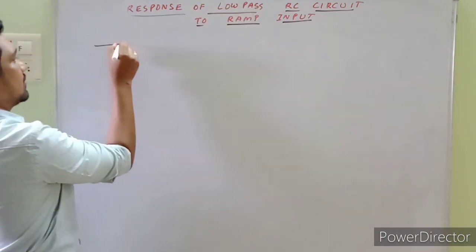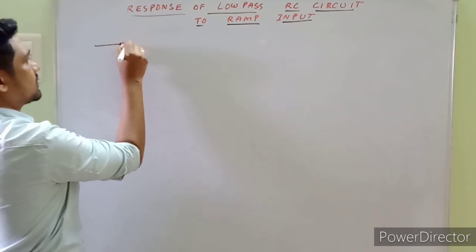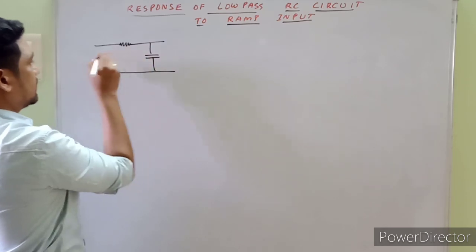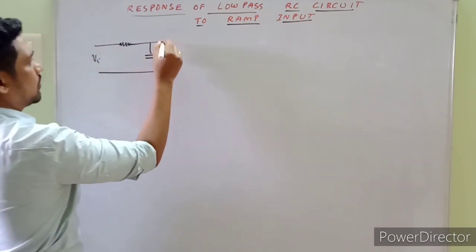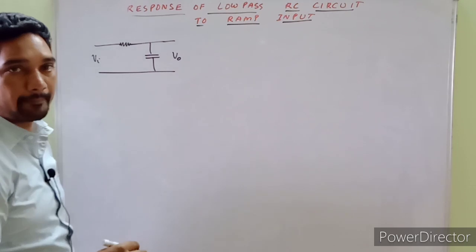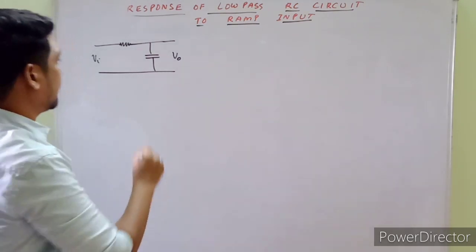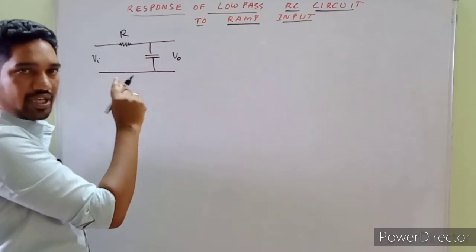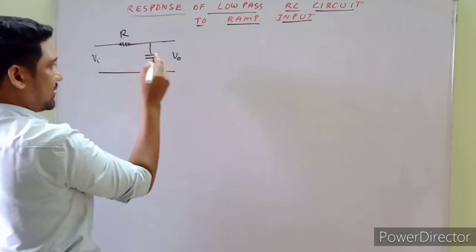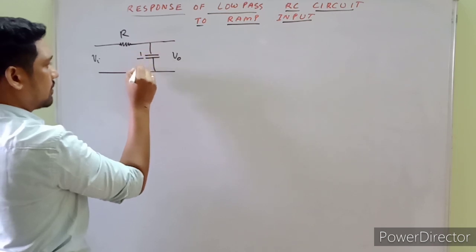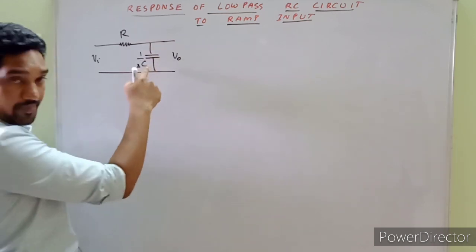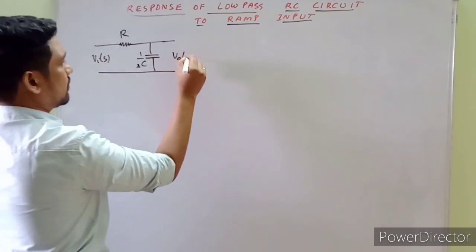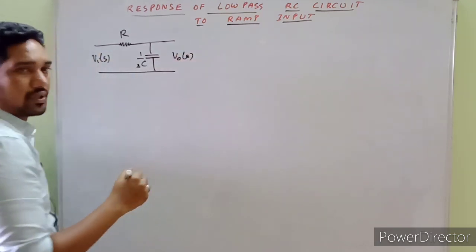The circuit consists of a resistance and a capacitor. The input is given here and the output is collected across the capacitor. For the Laplace equivalent circuit, the capacitor is represented as 1/(sC), with VI(s) as input and V₀(s) as output.